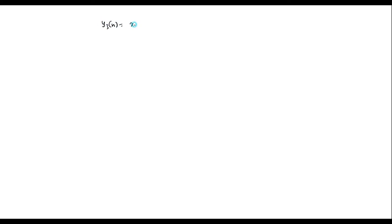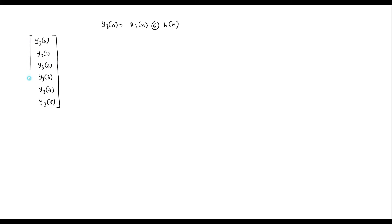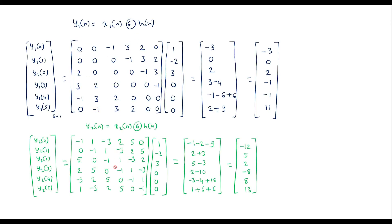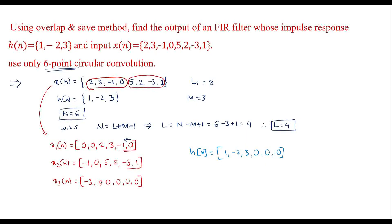Now we compute y3 of n, which is x3 of n convolved with h of n. We write the y3 output matrix with entries y3(0) through y3(5). The x3 of n sequence written vertically is: minus 3, 1, 0, 0, 0, 0.